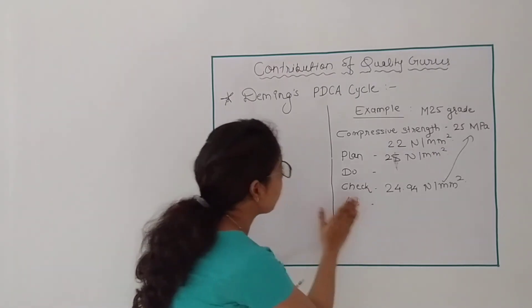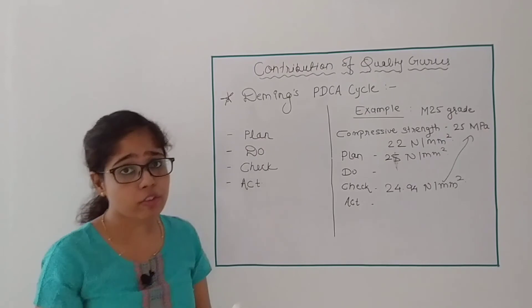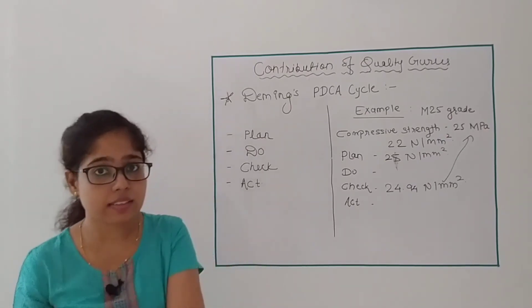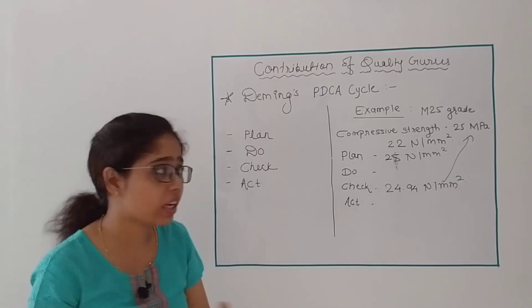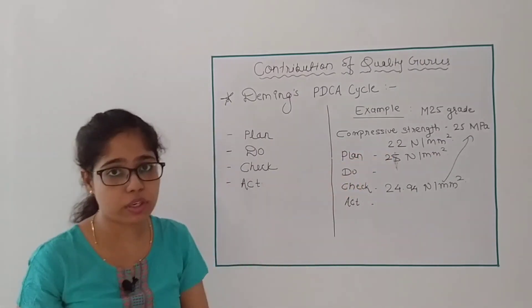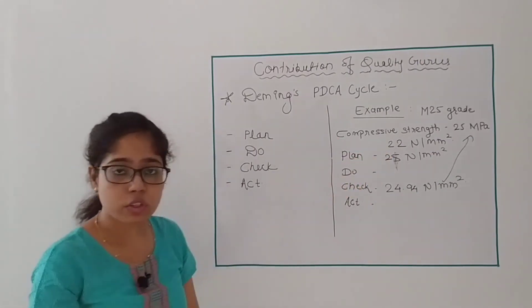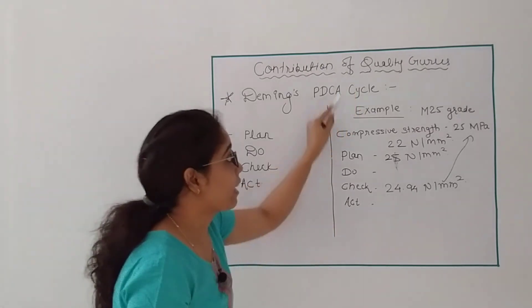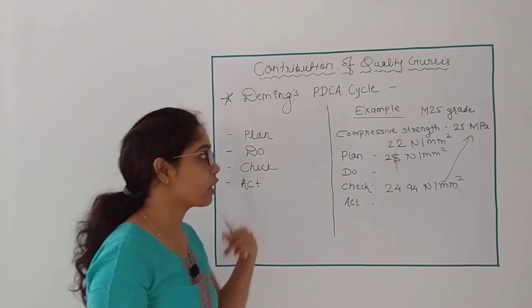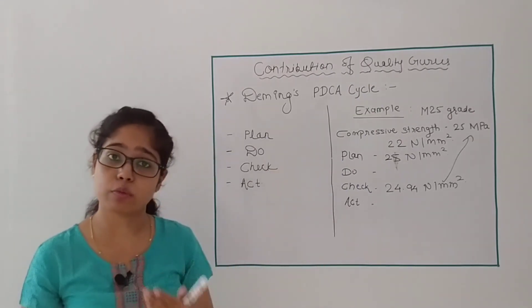So this is your PDCA cycle. If you don't get the expected result, now I need 25 but if I get 22 or 23 N per mm square, I will repeat this process again. That's why it is called a cycle. This cycle is mostly useful for continuous improvement of the products.